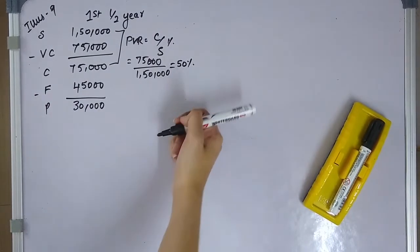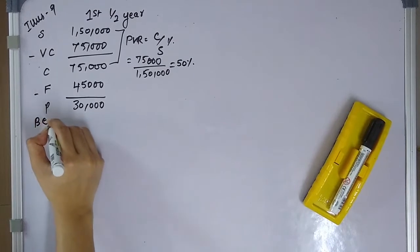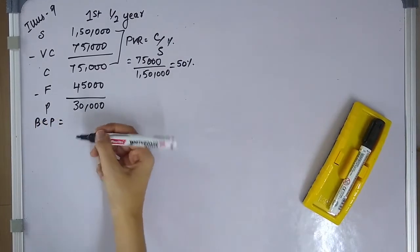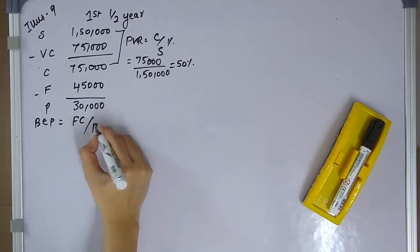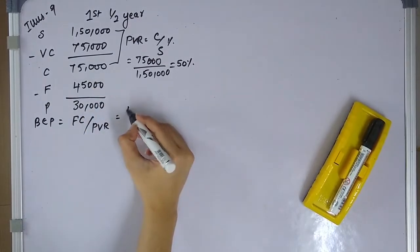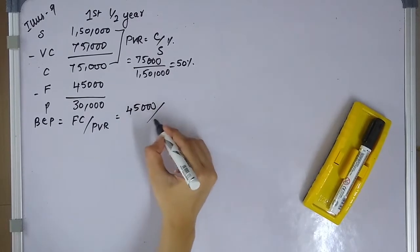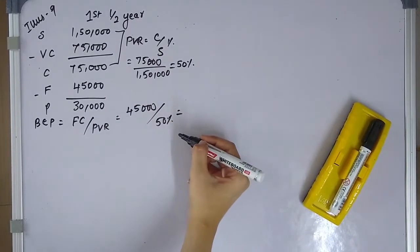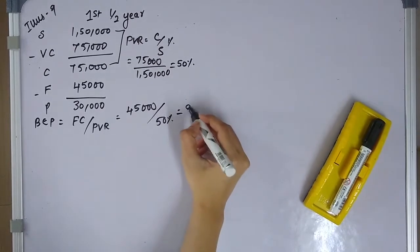Next is the break-even point. Break-even point equals fixed cost divided by PV ratio. Fixed cost is 45,000 and PV ratio is 50%, which gives us a BEP of 90,000.